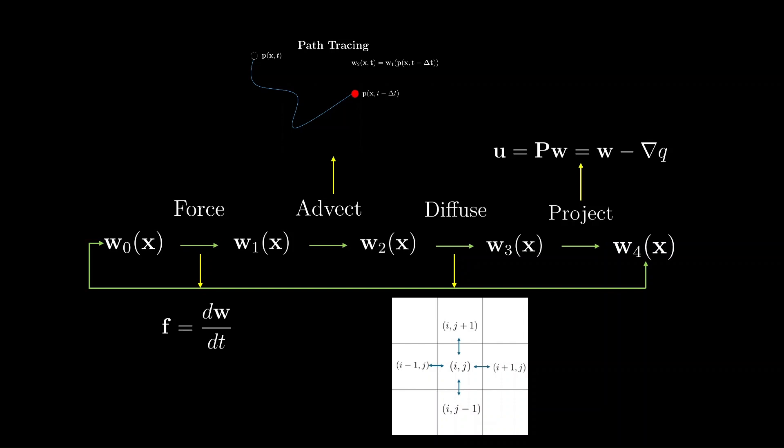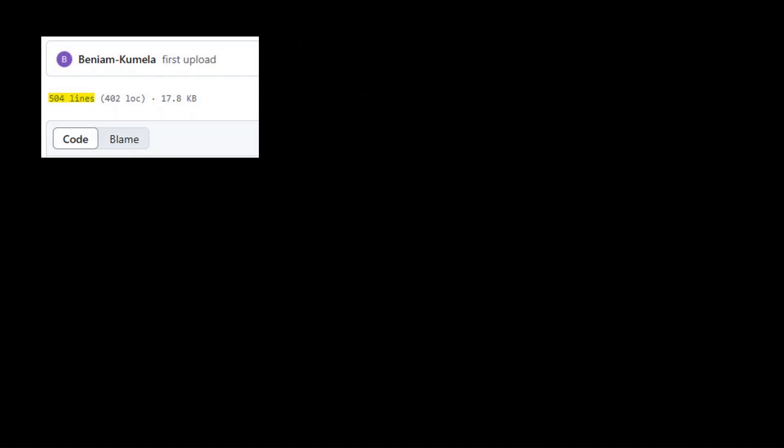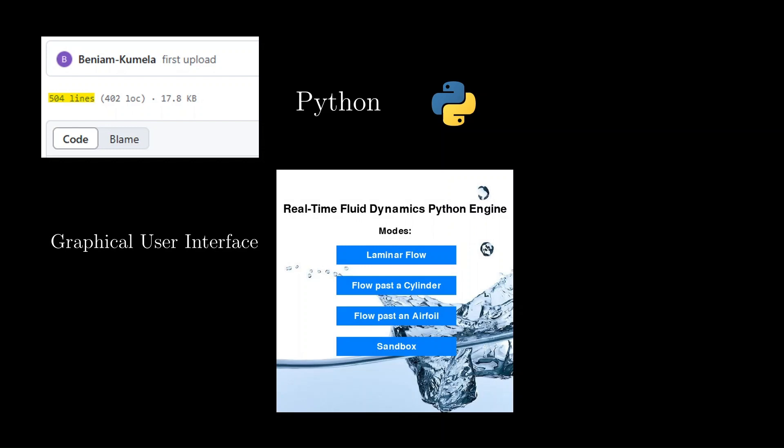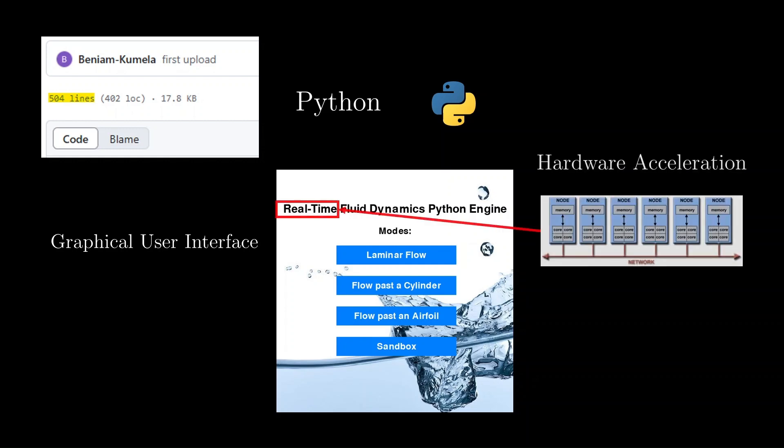The velocity we get here is then fed back into the first step. I implemented all methods in Python within just over 500 lines of code, writing a graphical user interface in which users can visualize and interact with flow in a variety of different situations. I also enabled hardware acceleration to make it computationally efficient and a real-time simulation.